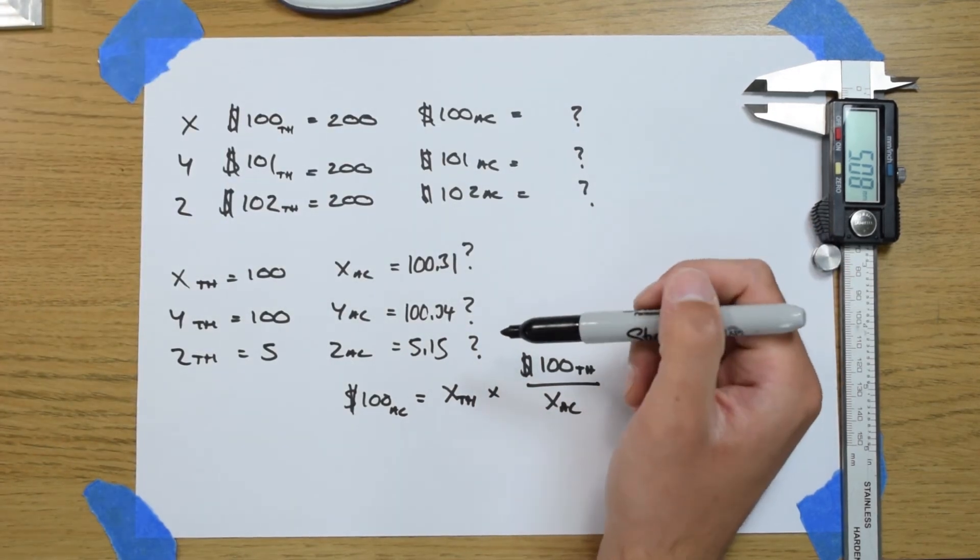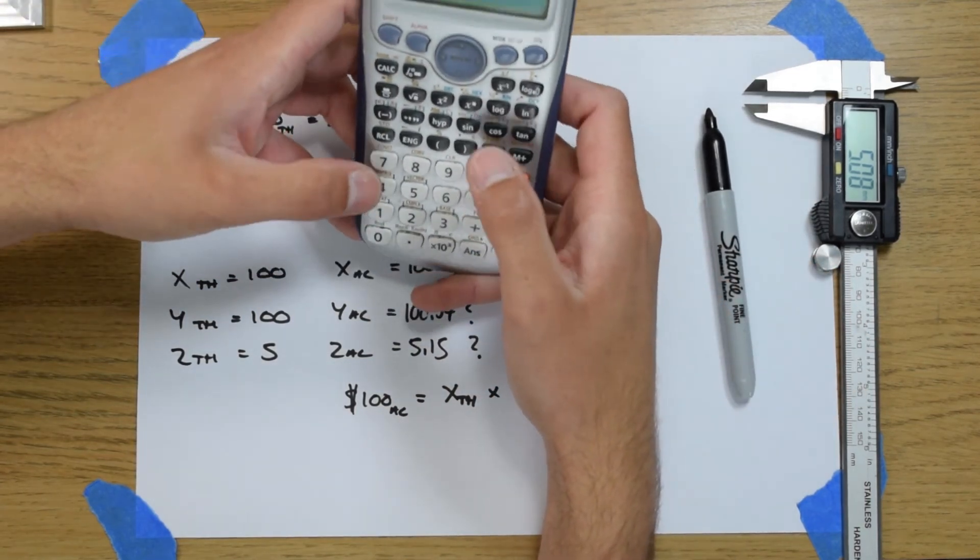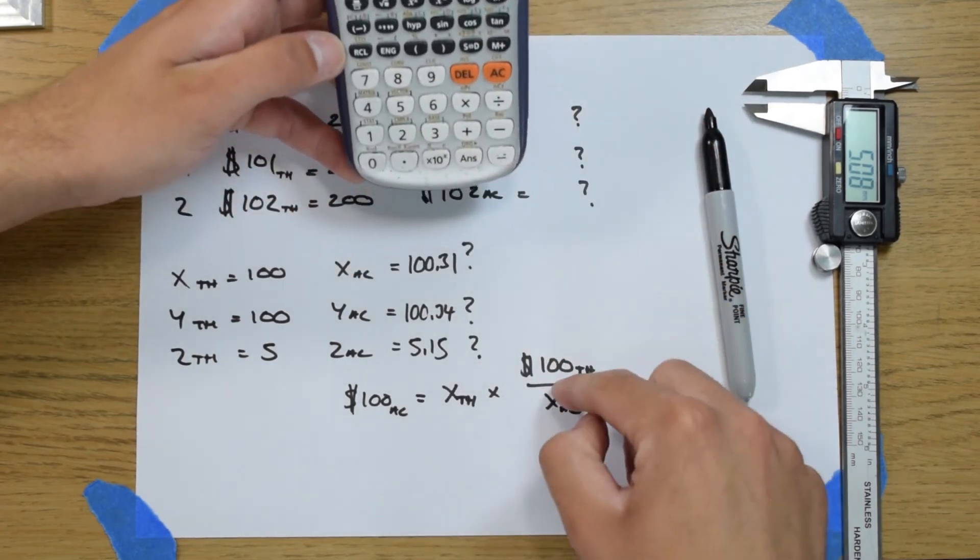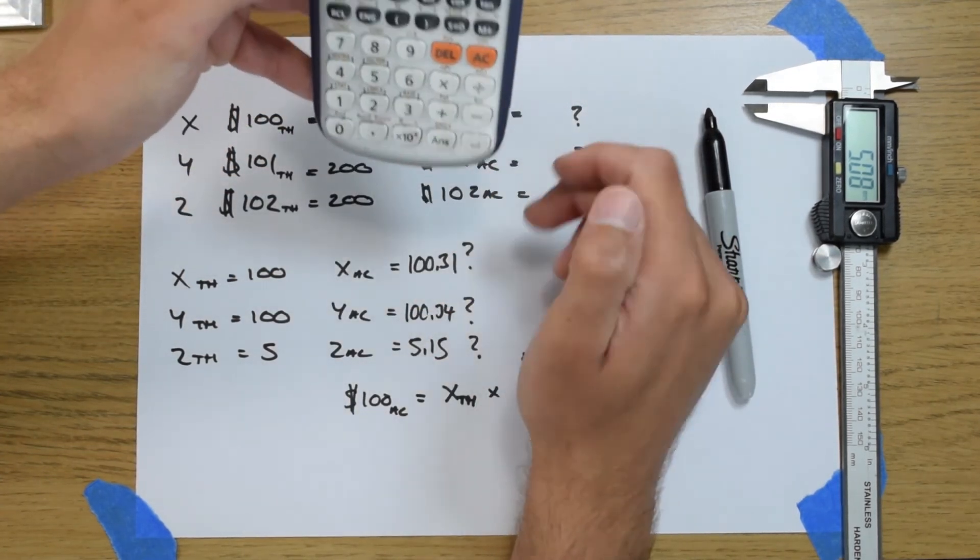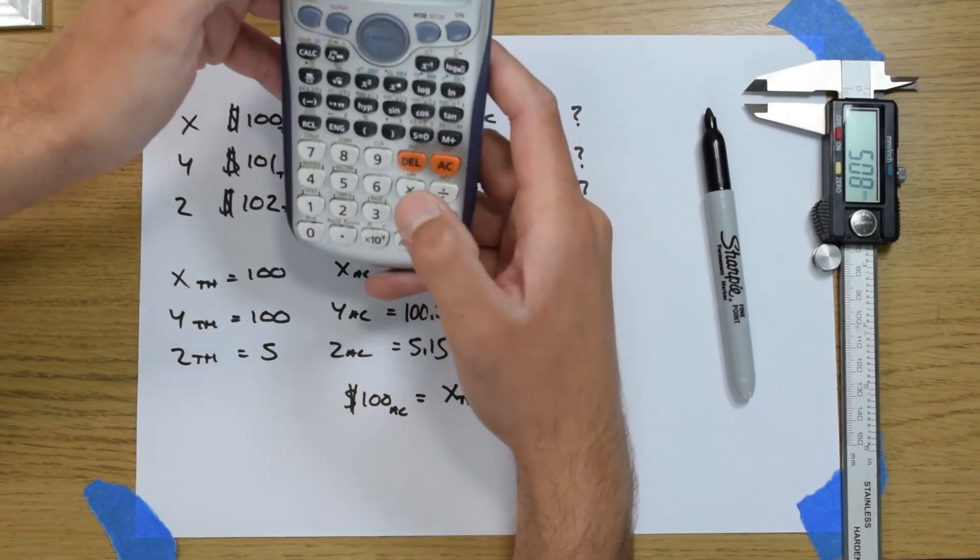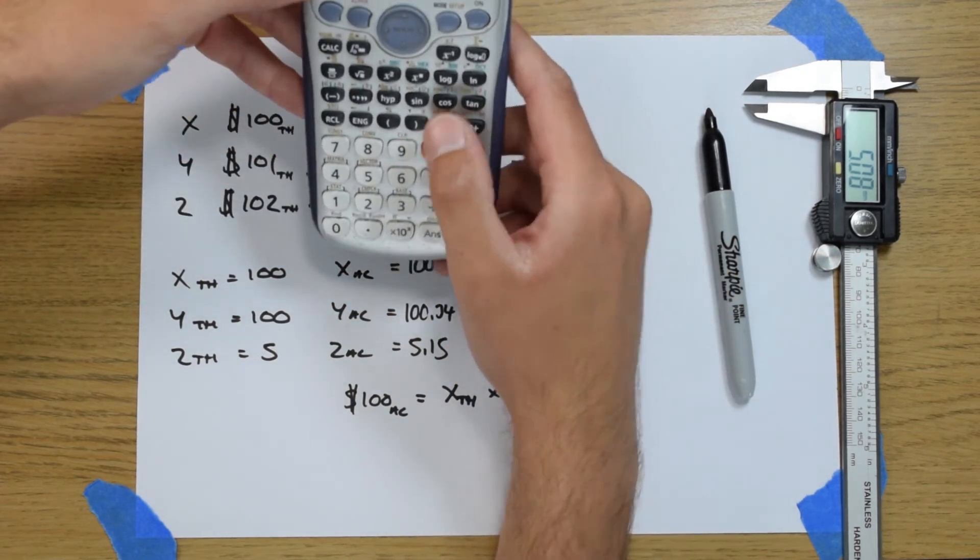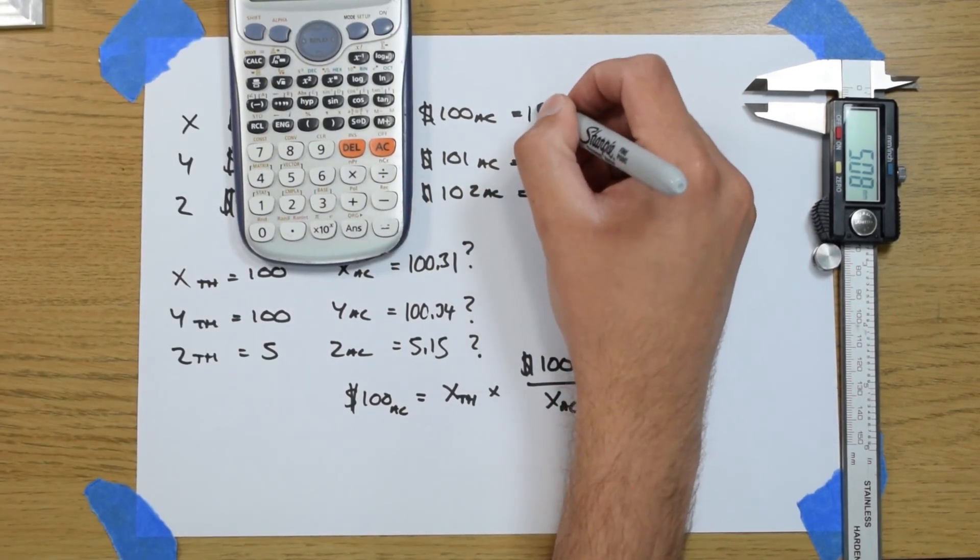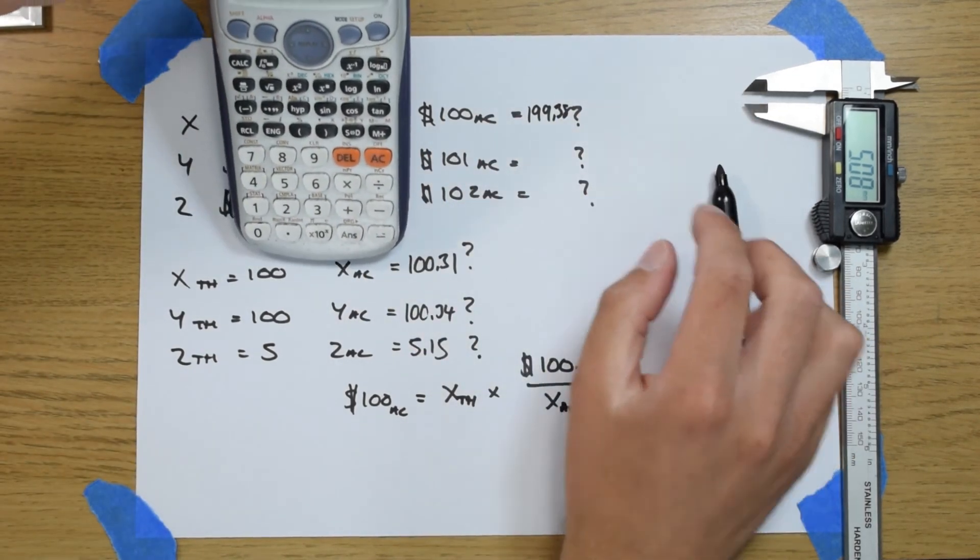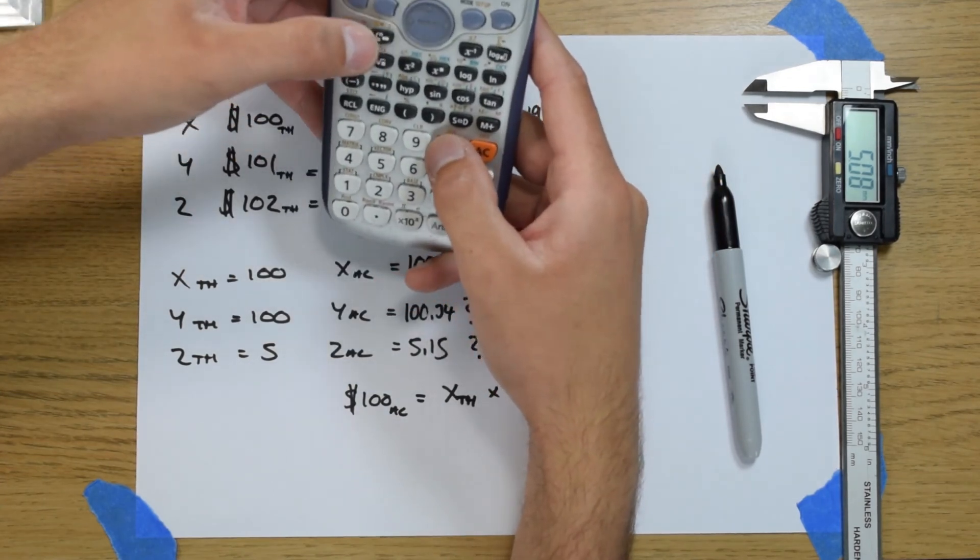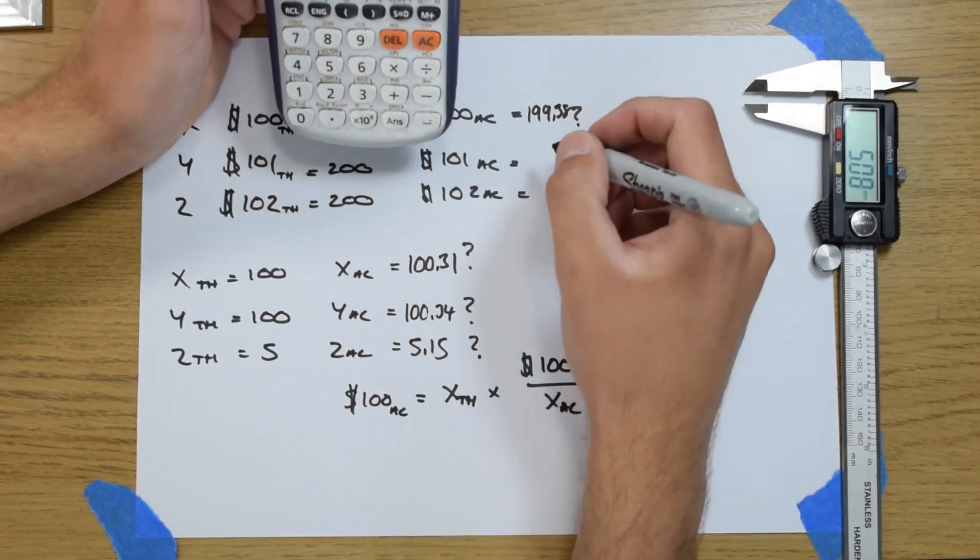Now we're going to use these values in our calculator to work out the actual values. So let's do the X. So we will do the theoretical value which is the $100 theoretical which is 200, divided by the X actual which is 100.31 times by the X theoretical which is 100. So that gives us a value of 199.38. Next we'll do the same for the Y axis. The 200 and 100 exactly the same. We just need to change this bottom value. So that's 0.34. So that's 199.32.